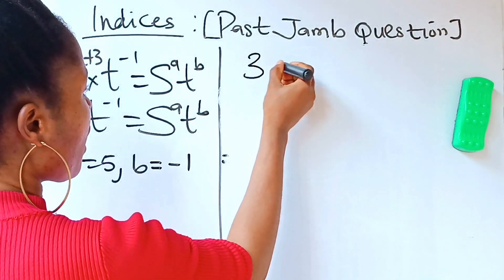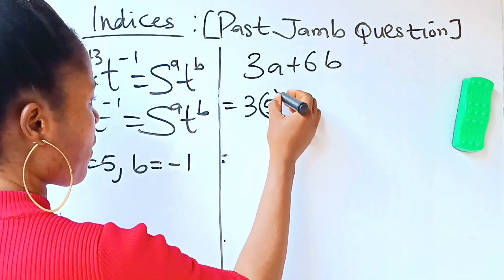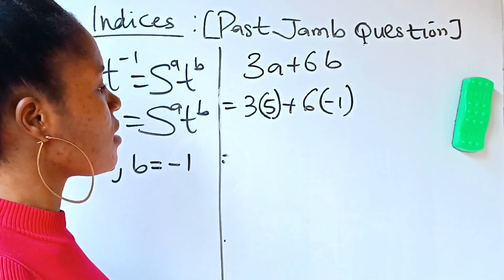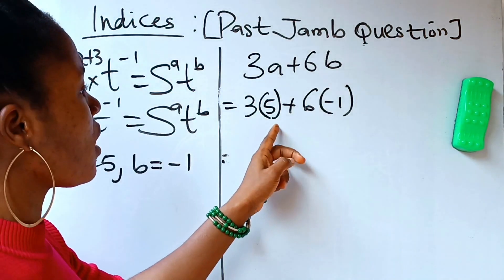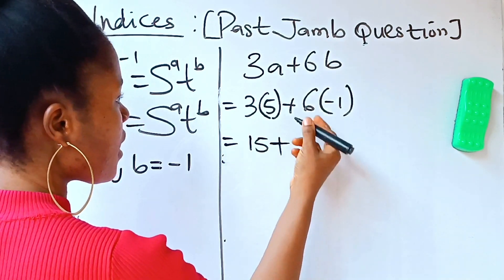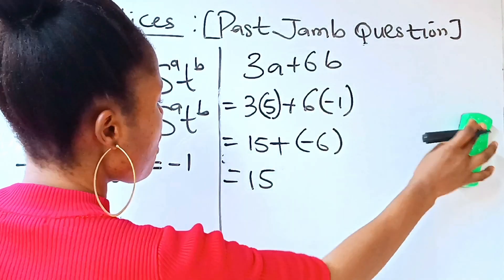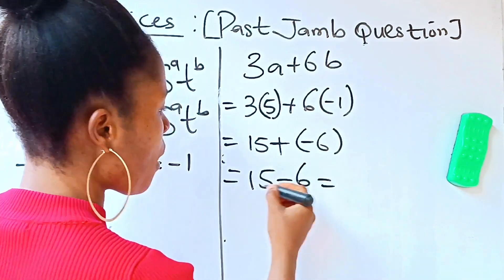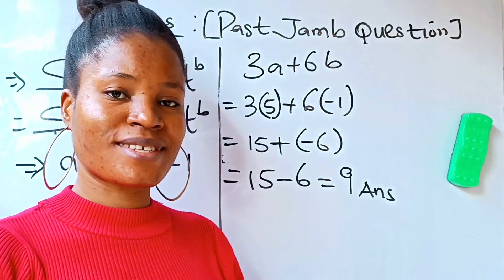We substitute: 3a plus 6b equals 3 times 5, plus 6 times minus 1. That gives 15 plus 6 times minus 1. Positive times negative gives negative, so it is 15 minus 6, which equals 9. The answer is 9. Thank you for watching — see you next time.